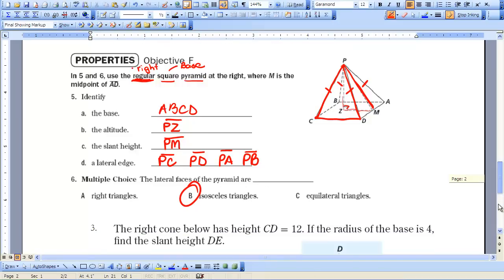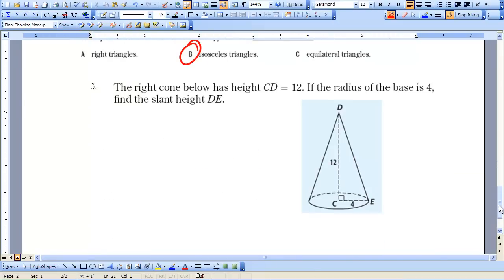Let's look at the last example here. The right cone has a height CD of 12 and a radius. If the radius of the base is 4, find the slant height DE. We have a right triangle here.